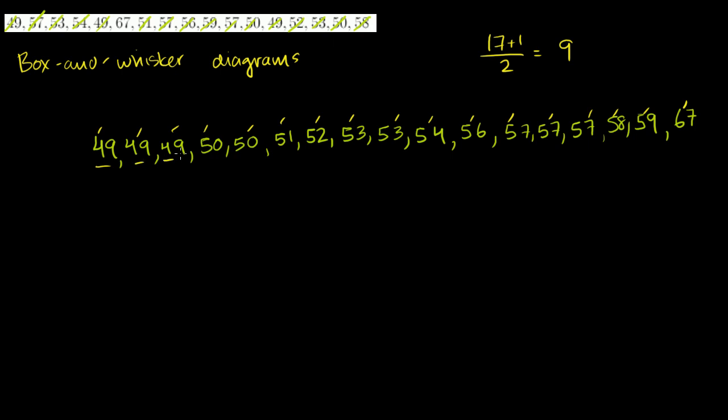So count 9 spaces from either the left or the right-hand side, and you will get the middle number, which is 53. And if you ever have a situation where you only had 16 numbers, it would be 16 plus 1 divided by 2, you get 8 and 1 half. That means count 8 spaces and then go halfway between that number and the number right after that. But anyway, 53 right here is the median.